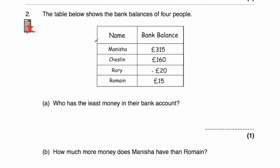Question two: the table below shows the bank balances of four people. Manisha has £315, Cheslin has £160, Rory's bank balance is negative £20 so he's overdrawn, and Romain's bank balance is £15. Part A asks who has the least money in their bank account. Obviously Rory's got a negative amount — he's got negative £20, he owes the bank £20. So Rory has the least in his bank account.